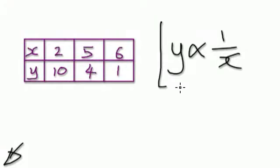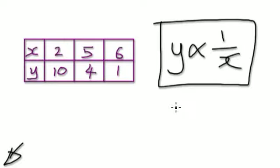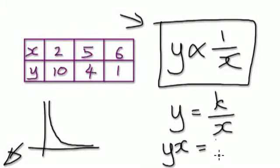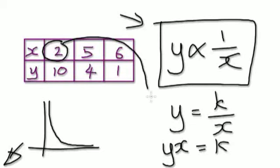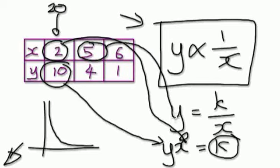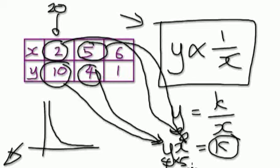Suppose Y is inversely proportional to X. That means Y equals K over X, and if you multiply both sides by X, then Y times X should always be the same number. Putting X equals 2 and Y equals 10 gives K equals 20. Putting X equals 5 and Y equals 4 gives 4 times 5, so K is also 20.